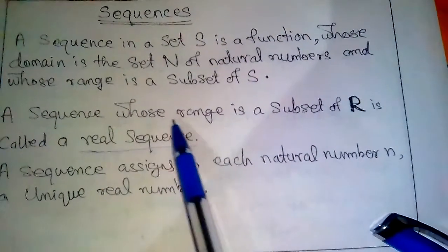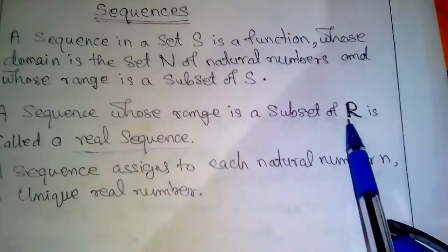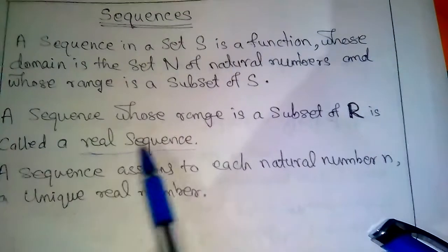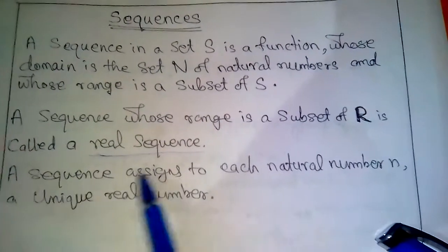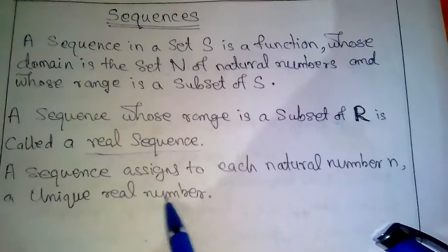A sequence whose range is a subset of R, where R is the set of real numbers, is called a real sequence. A sequence assigns to each natural number a unique real number.